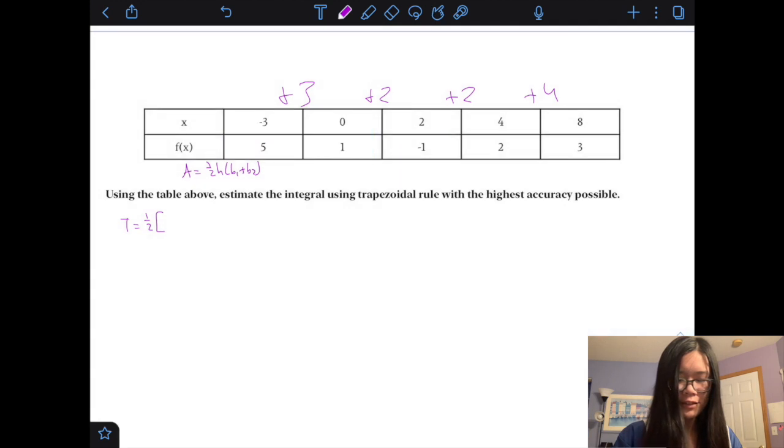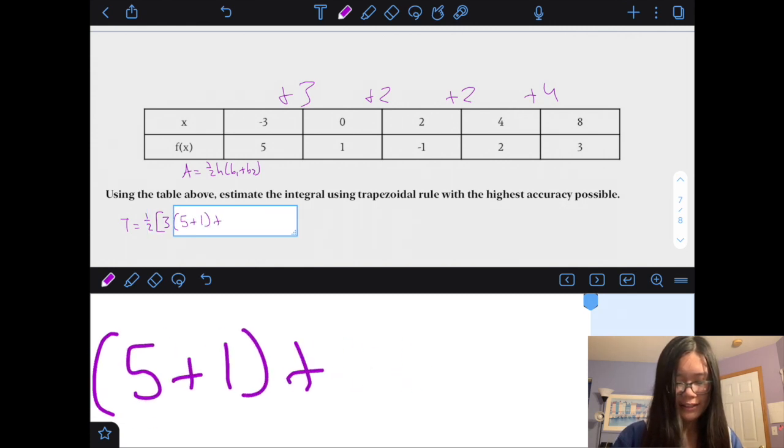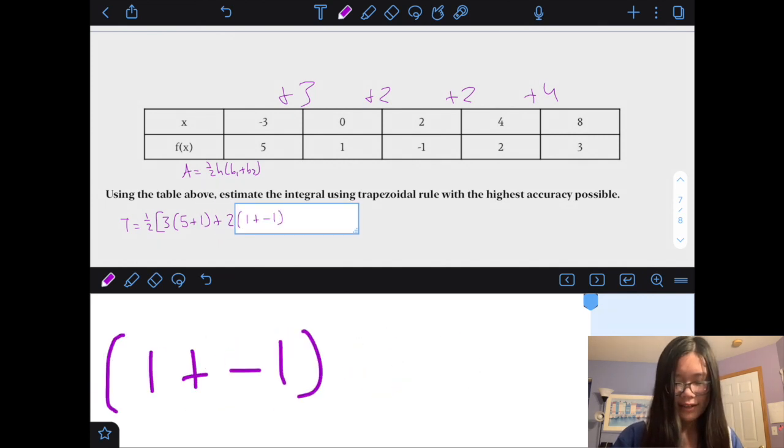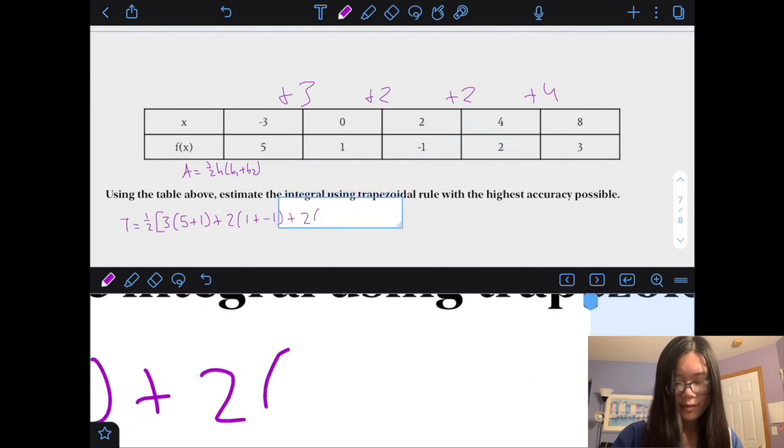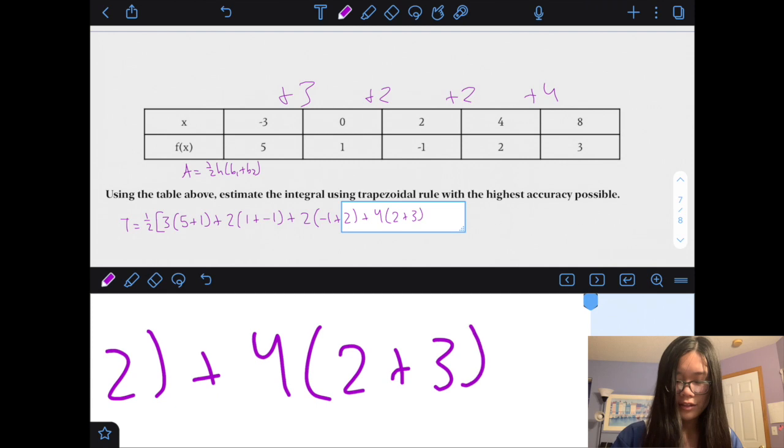So the height of this first trapezoid that would be made by these, would be 3, 3, and then, the first base is 5, the second base is 1, right, the next one, height would be 2, the first divide is 1, the second one is negative 1, for the third one, the third one here, height is 2 again, negative 1 plus 2, and then our last one, height would be 4, and 2 plus 3.